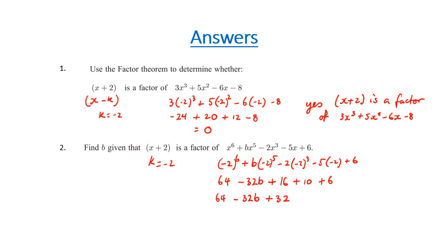This all has to equal zero because we know the factor. So negative 32b is going to equal, once I collect all the like terms and move it across, negative 96. So then b is going to be three.